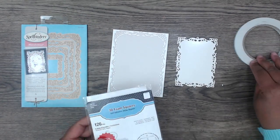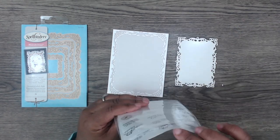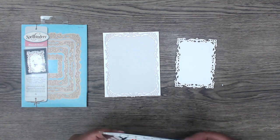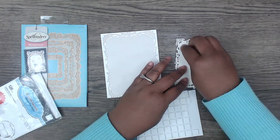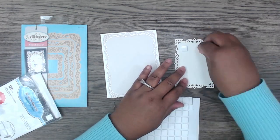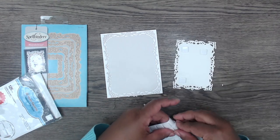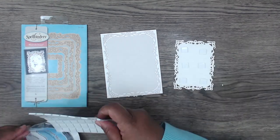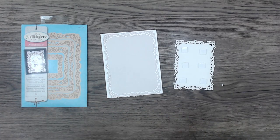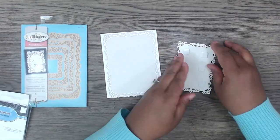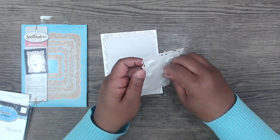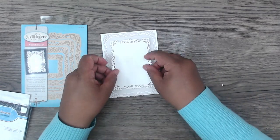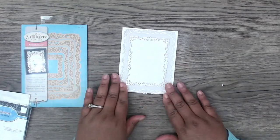This is the second die that I cut from that Decorative Labels 8. I'm going to pop that up with some 3D foam squares to add a little bit of dimension. This card is a bit of a monotone card. That's what helps make it so elegant. It's not a lot of loud colors, but the paper has a nice sheen. The edges of the dies make it look super fancy and elegant. I'm just going to pop it up right in the center of the previous die.